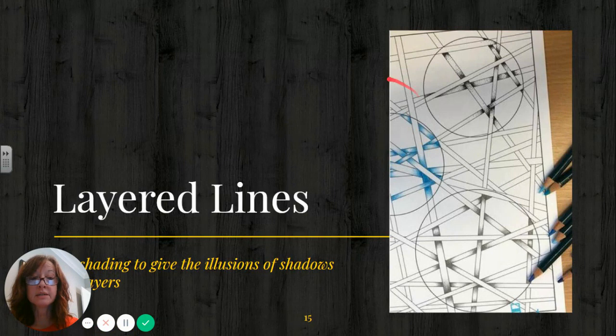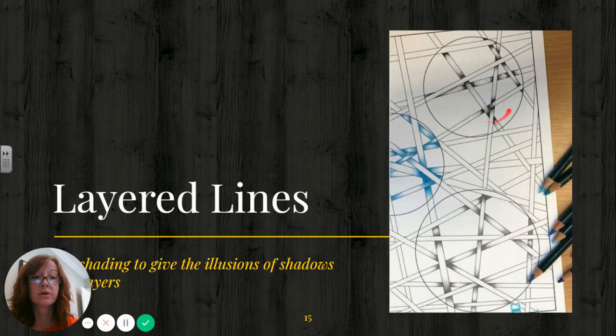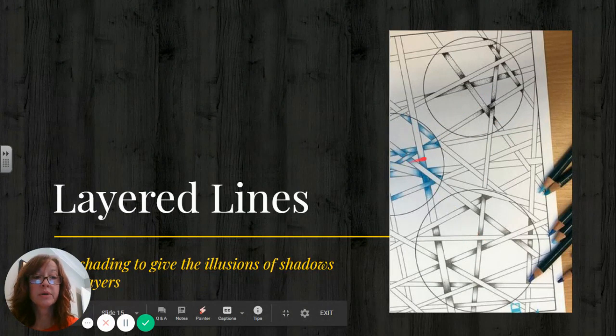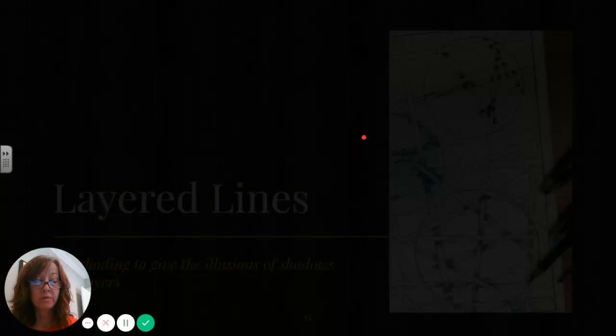So the layered lines is basically taking almost like strips of paper or ribbon and making it seem like they're layered on the surface. So this example has blended shading, colored pencil, and then stippling. And stippling is shading with dots. You can try any or all of those options.